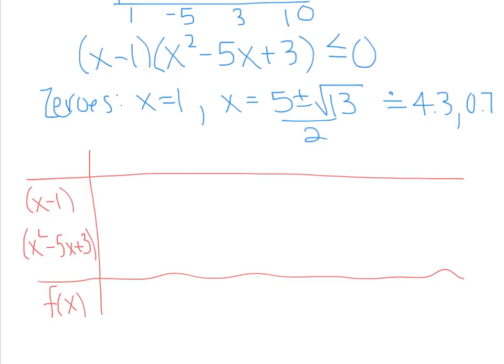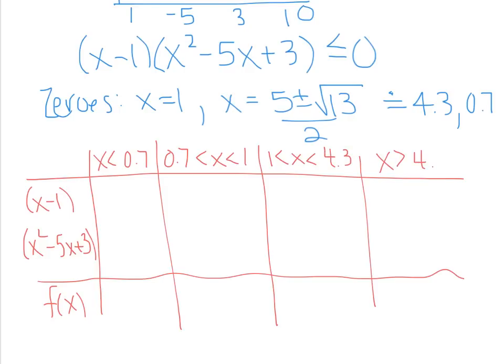Okay, so our lowest x-intercept is, of course, the 0.7, so we can do everything less than 0.7. Then we can do that one between 0.7 and one. Then we can do between one and 4.3. And then anything greater than 4.3. This is good practice on writing those intervals.